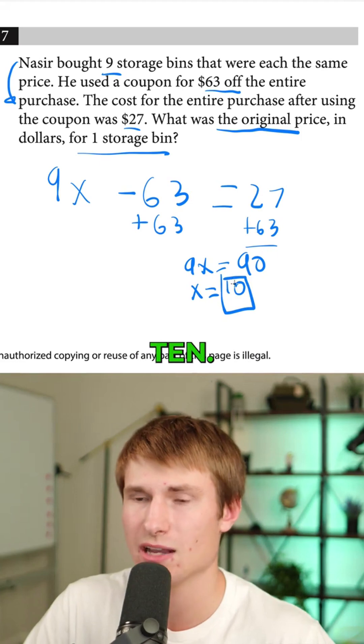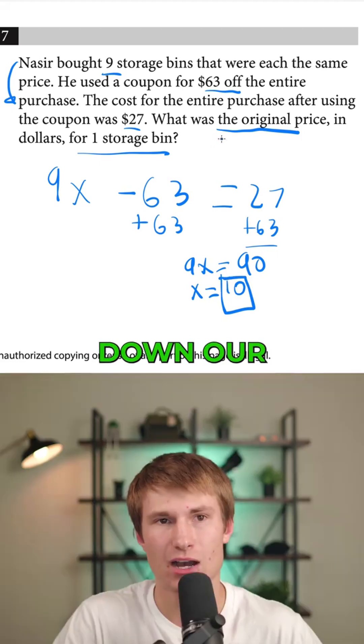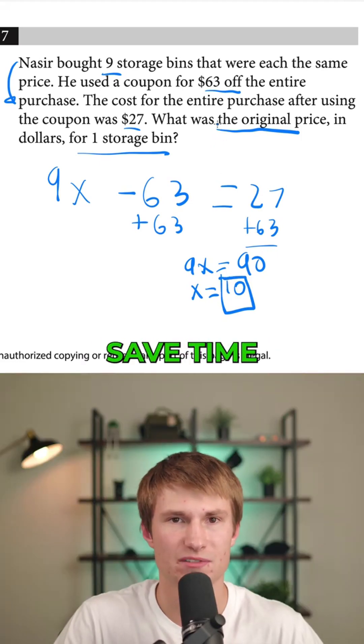So our answer is 10. As you can see, by writing down our coefficients and variables on our initial read-through, we're able to save time because we don't have to go back and re-read the problem.